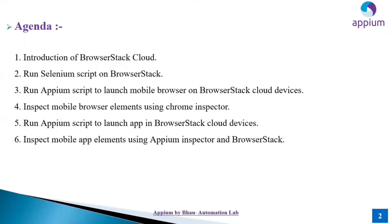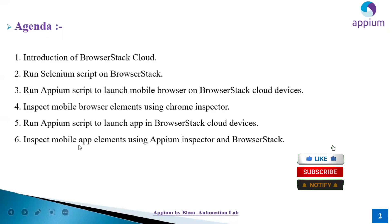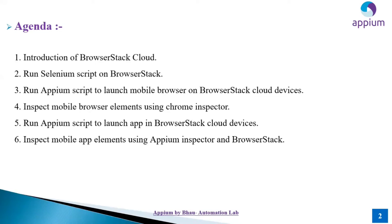We have already covered how to work with Appium in emulator services — launching Chrome browser and the API Demo app in emulator. Now we will launch the API Demo app in the cloud. We'll also inspect mobile app elements using the Appium Inspector in BrowserStack, and learn how to launch Chrome browser in BrowserStack Cloud on mobile and desktop.